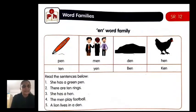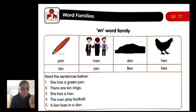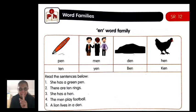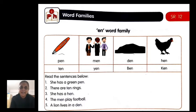Come to your SR 12 — EN word family. Read the eight spellings at the top, then find and circle them wherever they appear in the sentences below. Sentence one: She has a green pen. Number two: There are ten rings. Number three: She has a hen. Number four: The man plays football. Number five: A lion lives in a den.